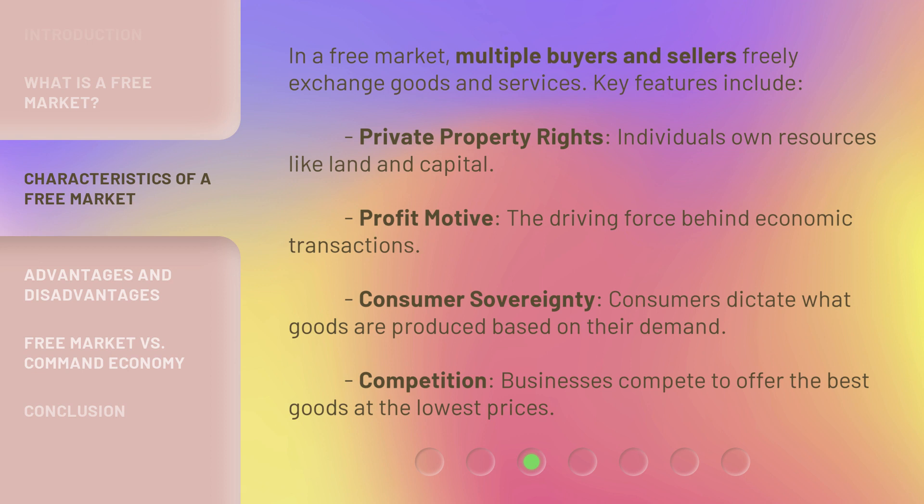In a free market, multiple buyers and sellers freely exchange goods and services. Key features include: private property rights — individuals own resources like land and capital; profit motive — the driving force behind economic transactions; consumer sovereignty — consumers dictate what goods are produced based on their demand; and competition — businesses compete to offer the best goods at the lowest prices.